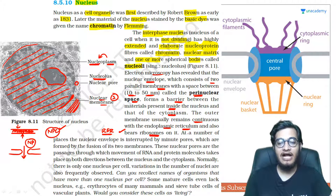At a number of places, minute pores are present in the membrane which are formed by the fusion of two membranes, as I showed you here. This is called nuclear pore.